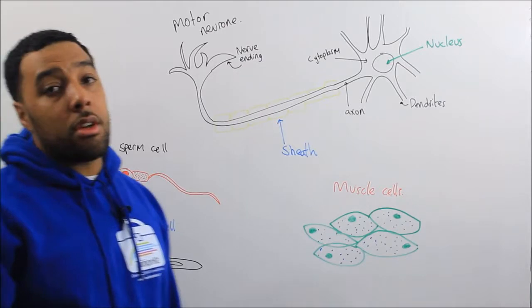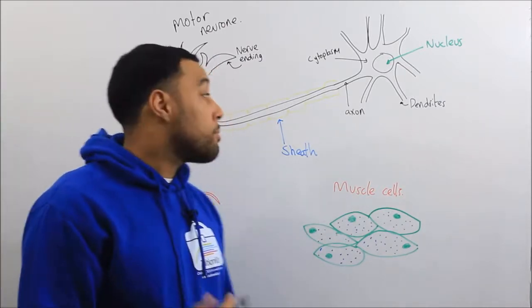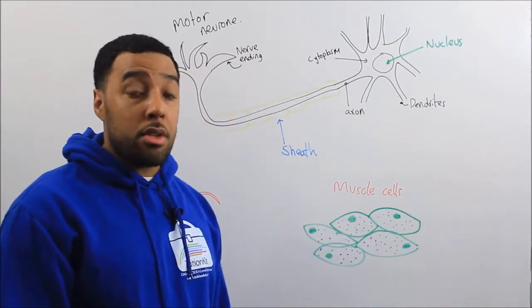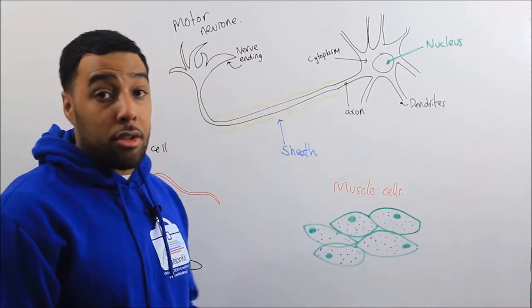The motor neuron cell is to transport an electrical impulse to an effector such as a muscle.